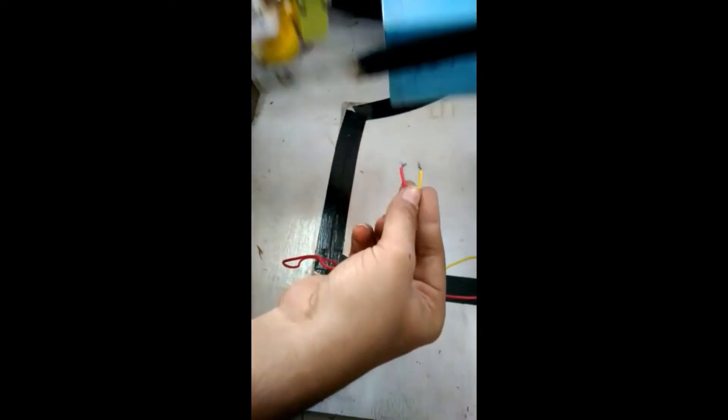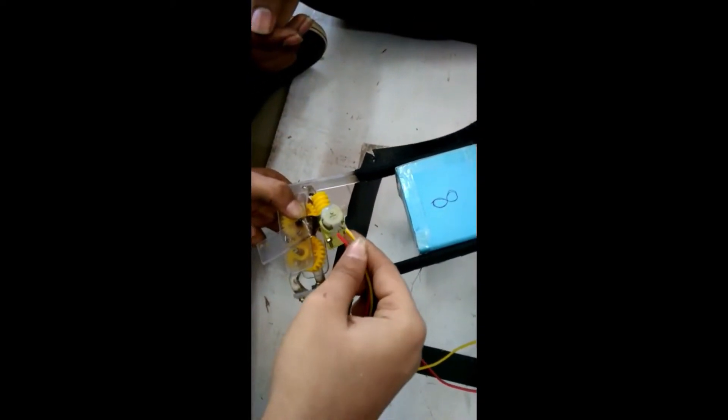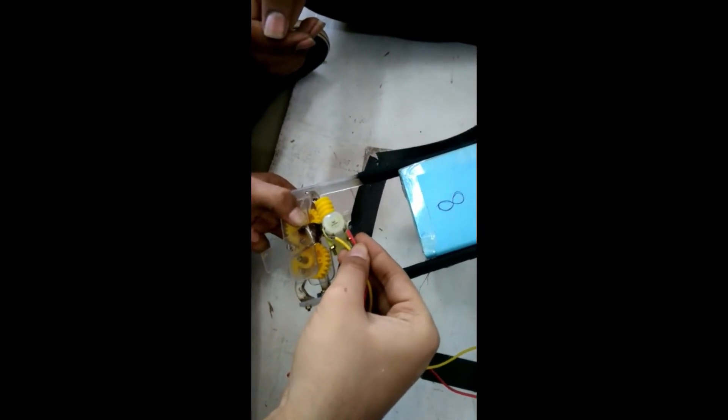When the power supply is given to the motor, it rotates the gear in one direction to bring the acrylic sheet closer to hold the box. When the power supply is given in the opposite direction, the motor rotates in the opposite direction which releases the box.